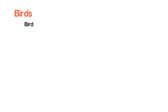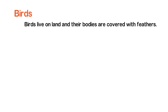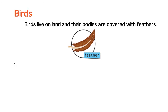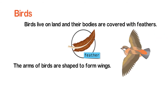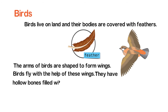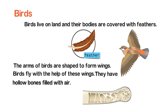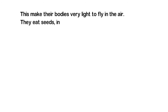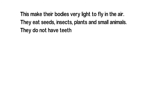Birds live on land and their bodies are covered with feathers. The arms of birds are shaped to form wings, and birds fly with the help of these wings. They have hollow bones filled with air, which makes their bodies very light to fly in the air. They eat seeds, insects, plants, and small animals. They do not have teeth, and have sharp beaks and claws.